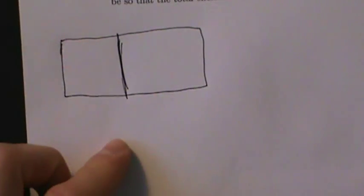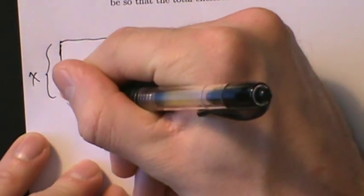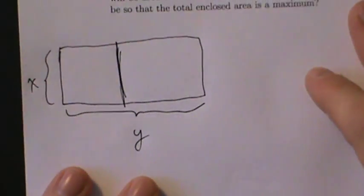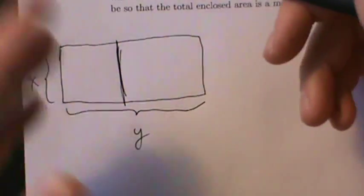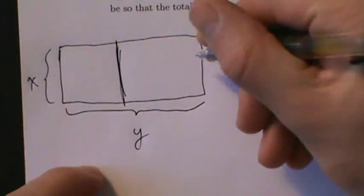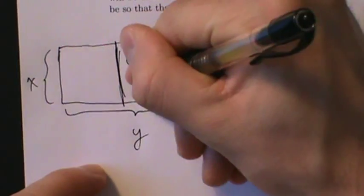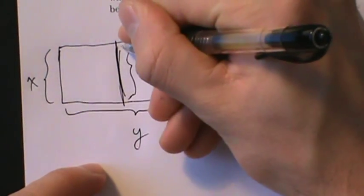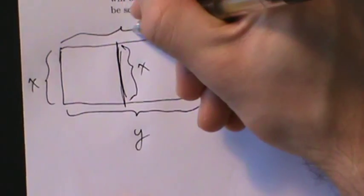Now we want to label this. Let's call the width x — so this side will be x, and this whole distance will be y. Since the shape is rectangular, this side is also x, and this third segment is also x. And then the top is also y.